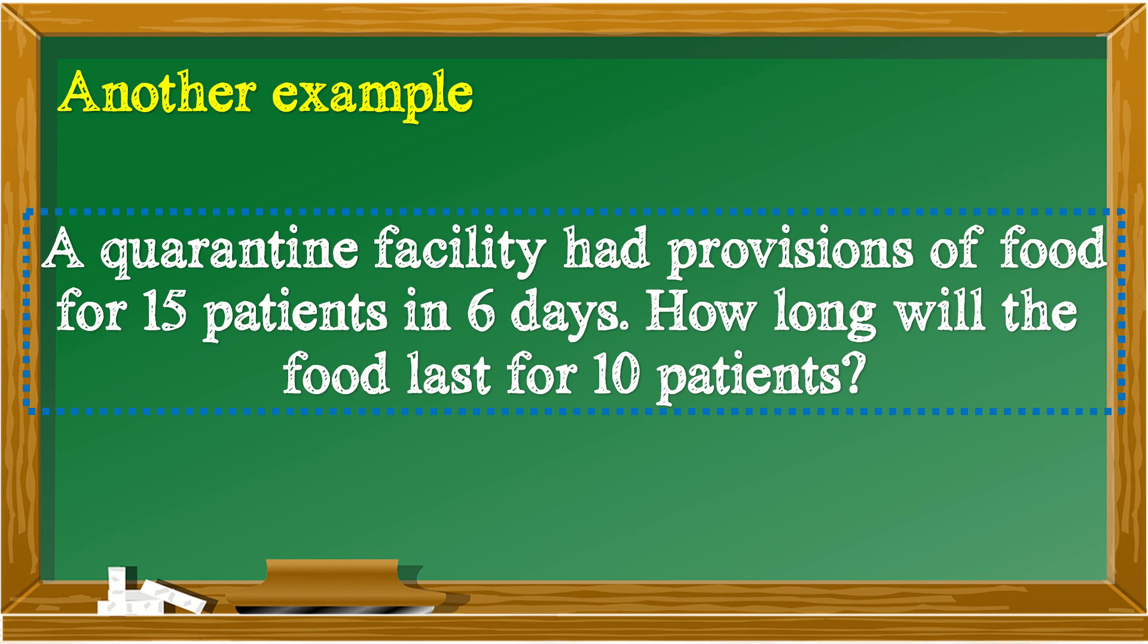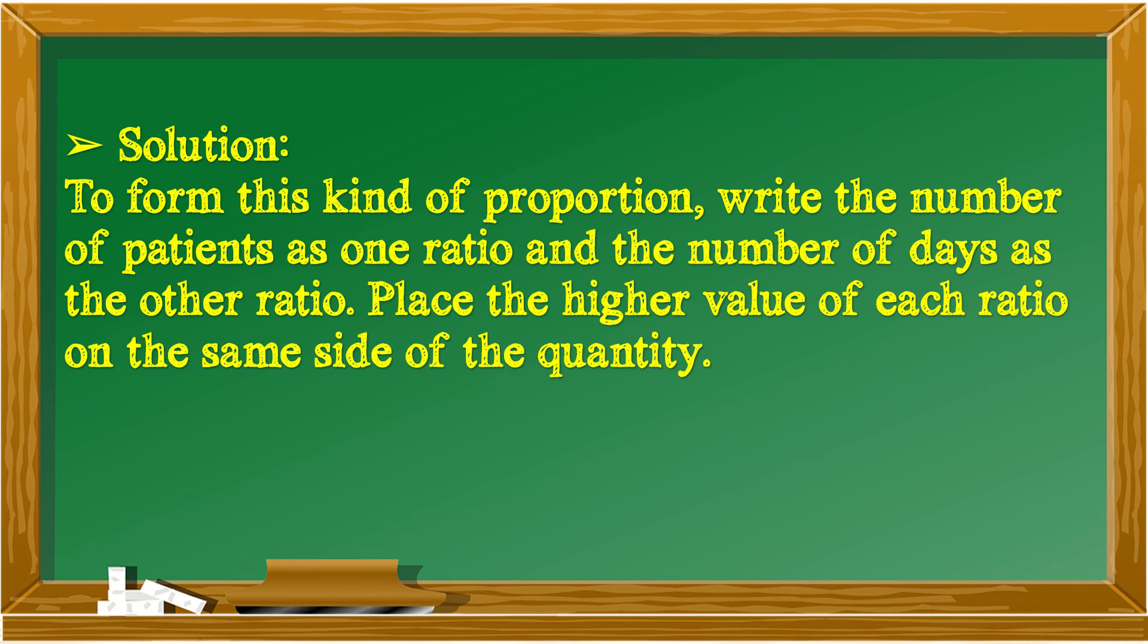So, in this problem, the number of patients decreases, so we will assume that the number of days will increase. To form this kind of proportion, write the number of patients as one ratio and the number of days as the other ratio. Place the higher value of each ratio on the same side of the quantity.